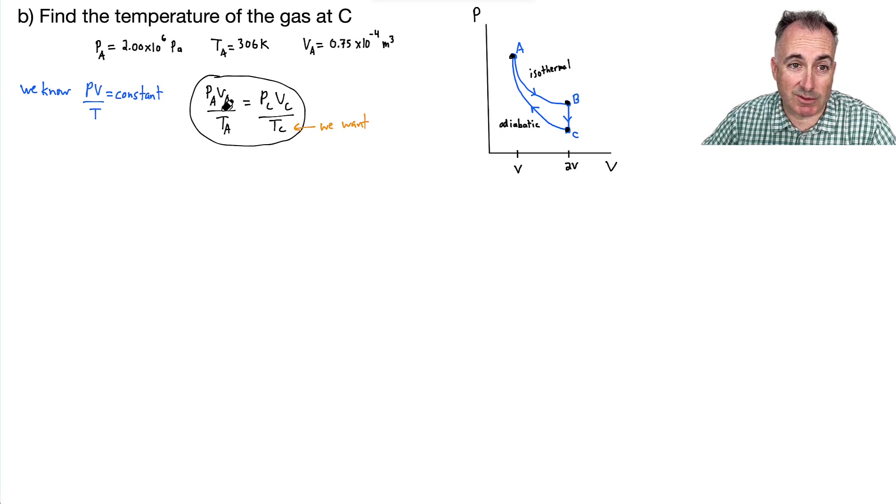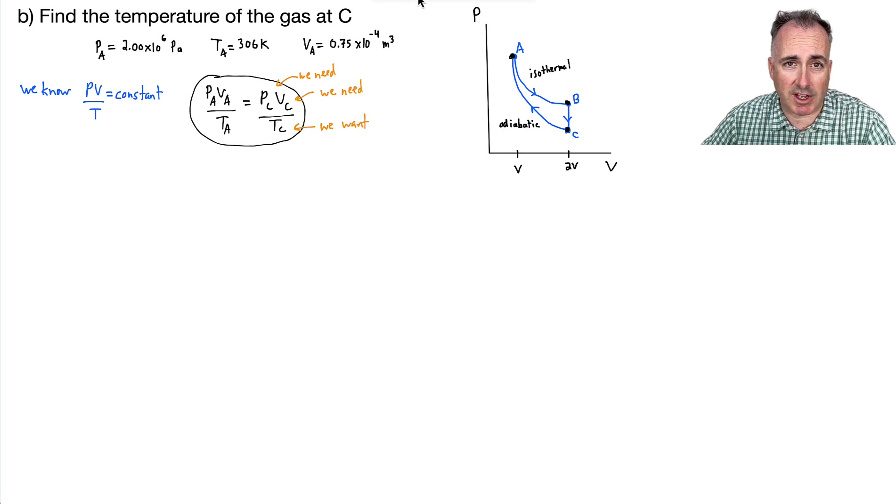Well, because this is actually telling us what we want here. Do you notice this here? We want this. But to do this, now, do we know this? Yes. We know this. We know this. Oh, but that means then that we need to know PC, and we need to know this, VC, as well. So I think that's maybe going to be my next course of action, then, is let's actually go ahead and find these.